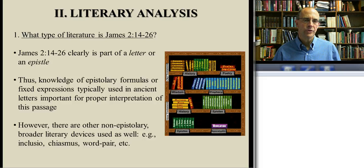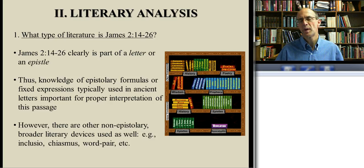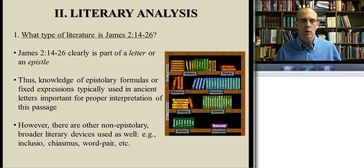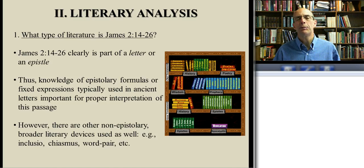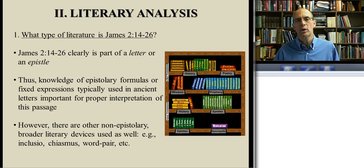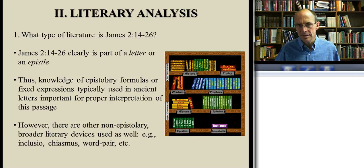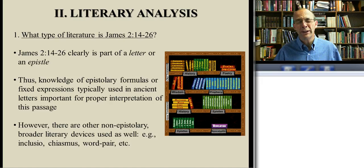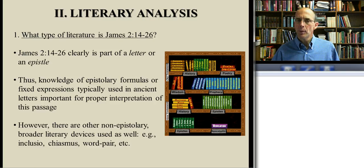We continue our study of James chapter 2, verses 14 to 26, by now approaching the passage from a literary perspective. The first thing we have to consider is the question of text genre, which is easy to answer here because all of the texts in this course are letters. That means we're especially attuned to any epistolary devices — the stereotyped expressions or conventions typical of the genre of letter writing in that day.